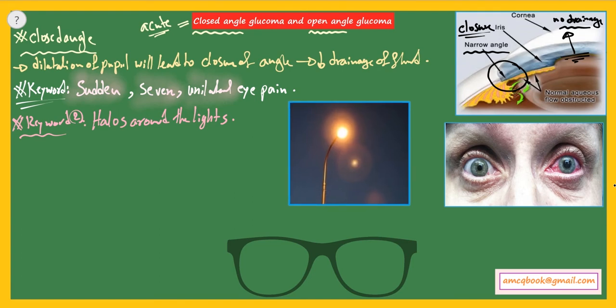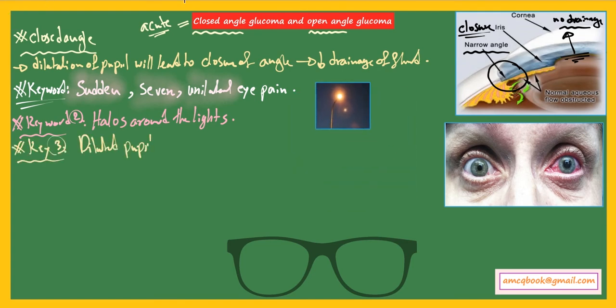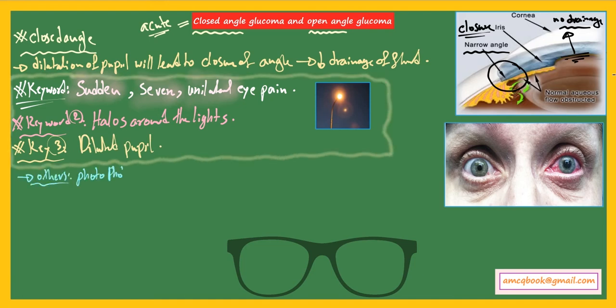You will also see a dilated pupil of the affected eye. Other symptoms include photophobia, lacrimation, and blurring of vision with eye injection. The investigation of choice is tonometry, which calculates the pressure of the aqueous humor inside the eye.